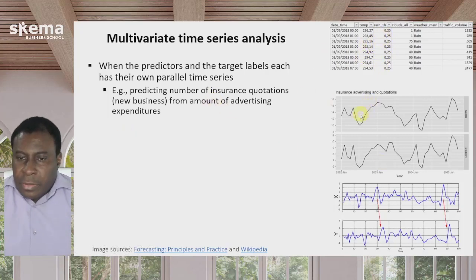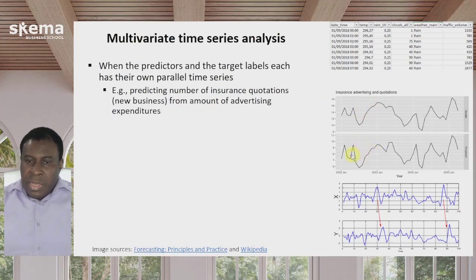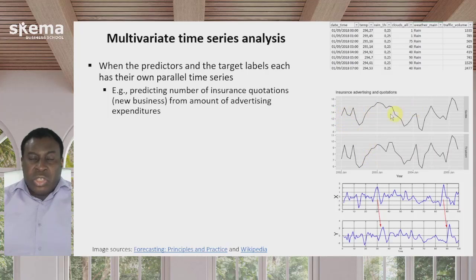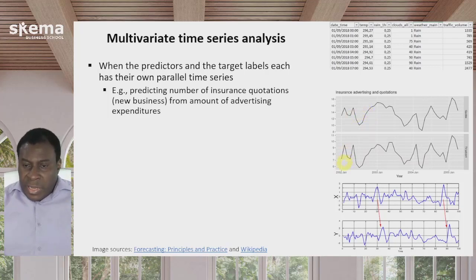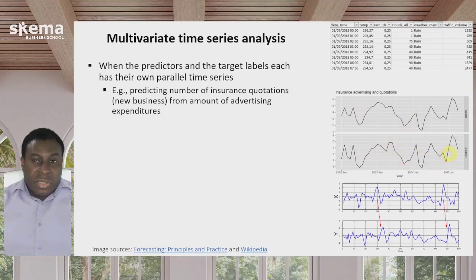Another simpler example: in this time series, you have television advertising compared to the number of quotations or amount of sales an insurance company makes — with the idea that the more they advertise on television, the more calls they get and the more insurance quotations they make. You can see that when advertising amounts are up, quotations go up; when advertising is down, quotations are down. They parallel each other very closely because there's a relationship.